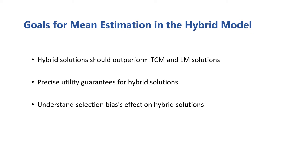Finally, since users self-partition into groups in the hybrid model based on their trust preferences, this opens the possibility of selection bias between the groups. Therefore, we want to determine what impact such bias may have on our solution's utility.